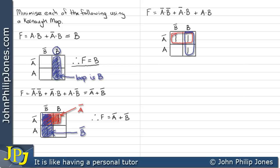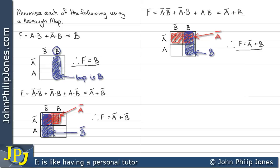The next thing to do is to look at the red loop, and we can see if I shade that all in, it's quite clearly in not A. If I have a close look at the blue loop, we can see that that is quite clearly in B. Therefore, F will equal not A or B, and consequently, this will minimise to not A or B.